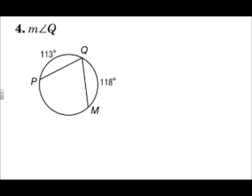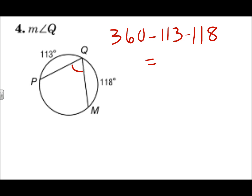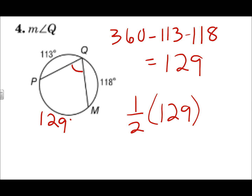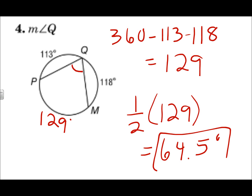The measure of angle Q is an inscribed angle, which is half of the measure of arc PM. The whole way around the circle is 360, and 118 plus 113 plus arc PM equals 360. So 360 minus 113 minus 118 gives you 129 — that's the measure of the intercepted arc. Half of that is the inscribed angle, which is 64.5 degrees. Again, 360 degrees around the circle, and the inscribed angle is half of the intercepted arc.